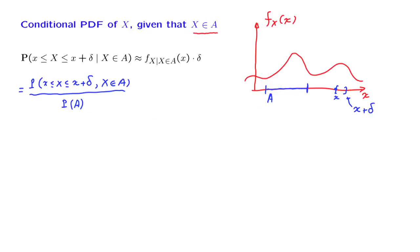Because the set A and this little interval are disjoint, these two events cannot occur simultaneously. So the numerator here is going to be 0.